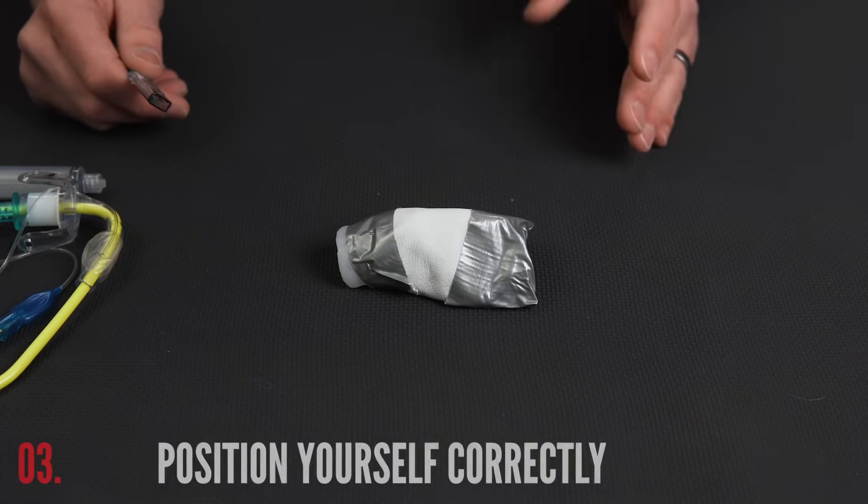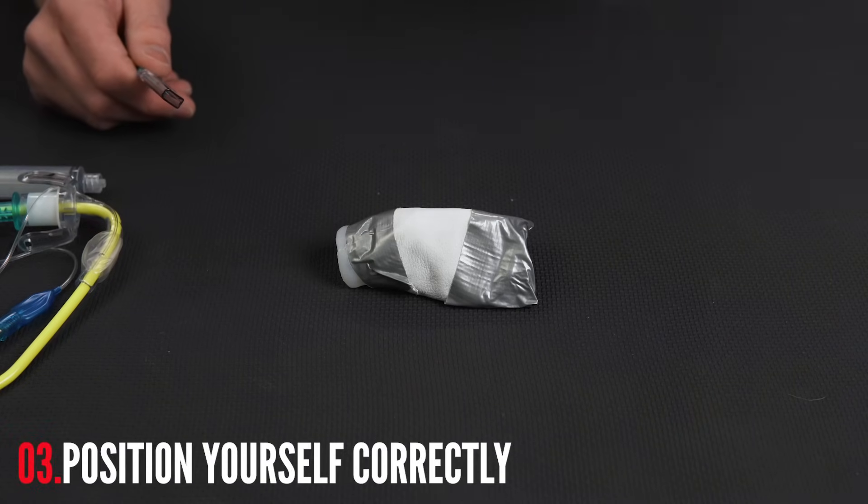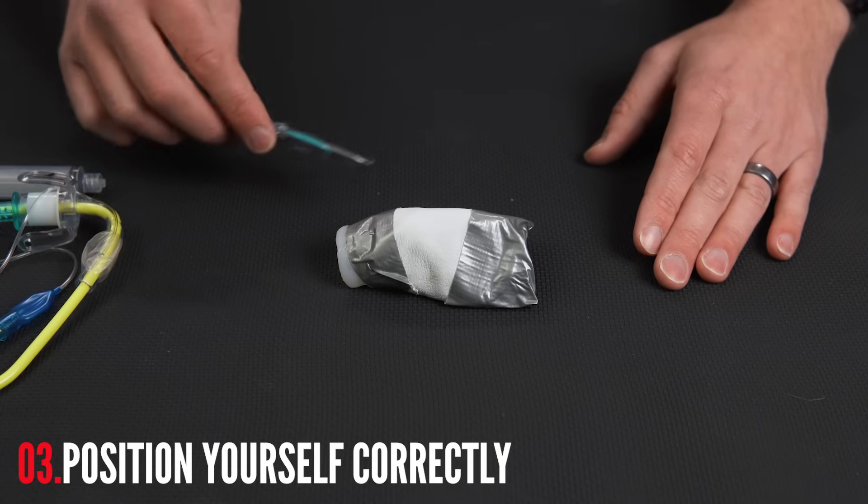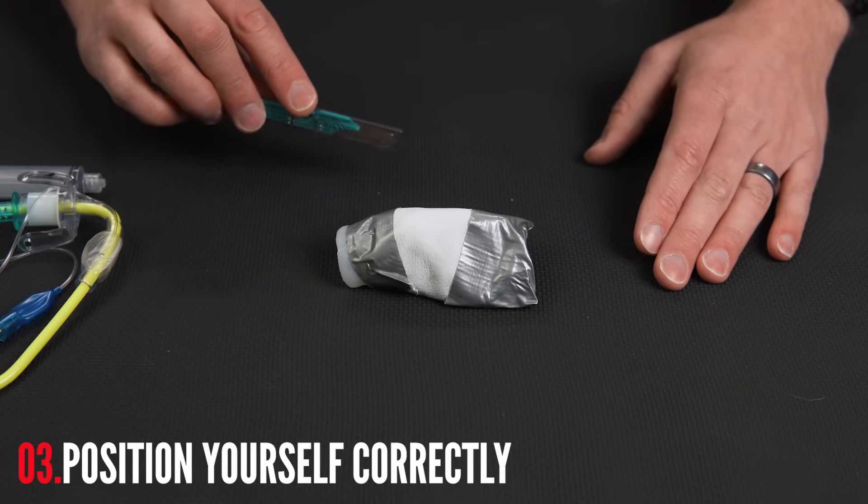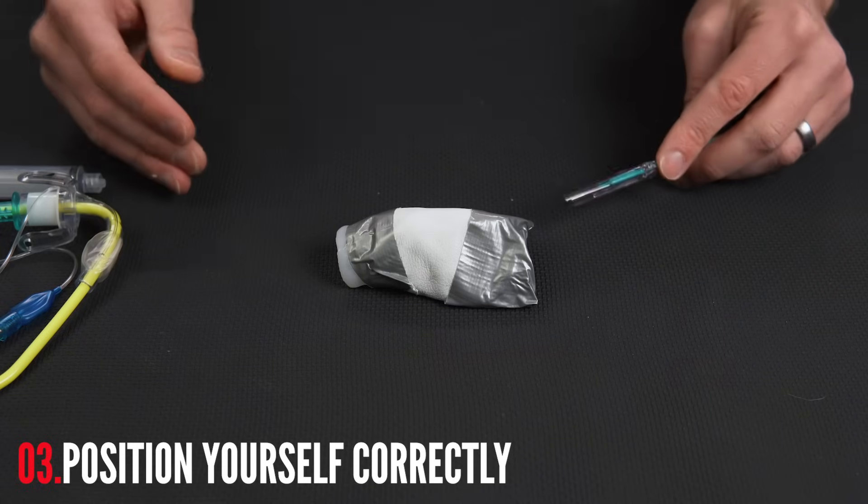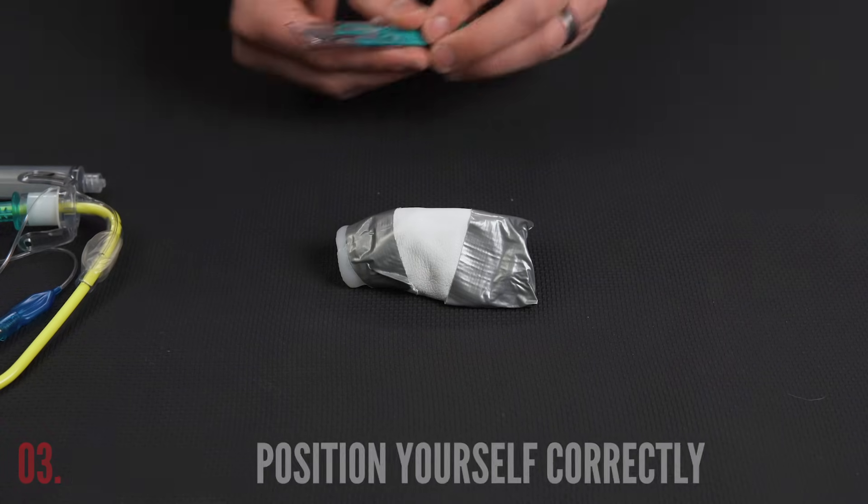When we position ourselves next to the patient, we make sure we are on whatever side is dominant. We need to be on that side of the patient. So if I'm right-handed, I need to make sure I'm able to hold the scalpel in the right hand and I'm going to position myself on the right side of the patient. If I'm left-handed, same thing.